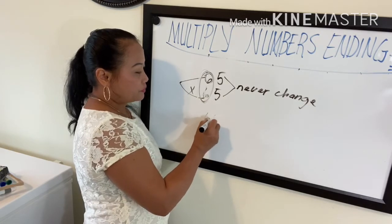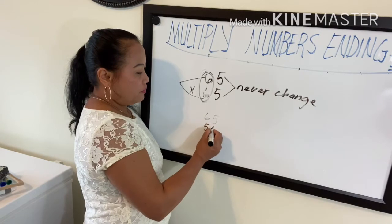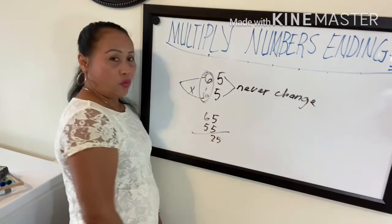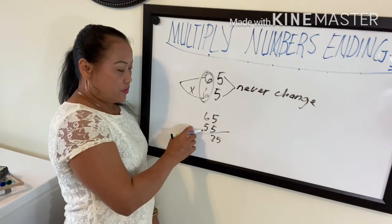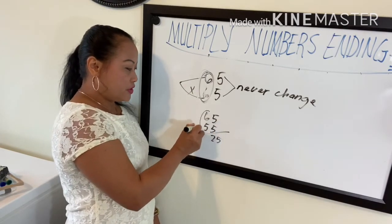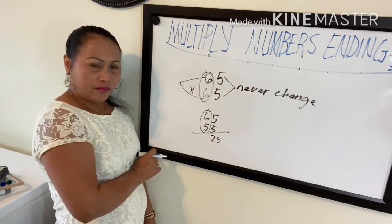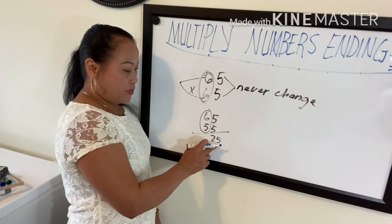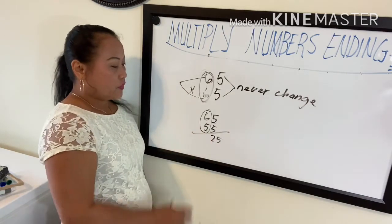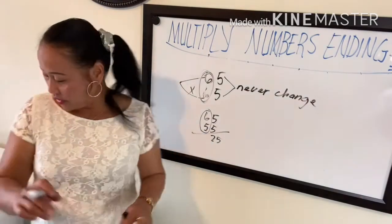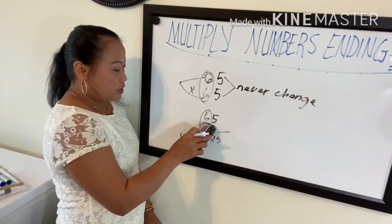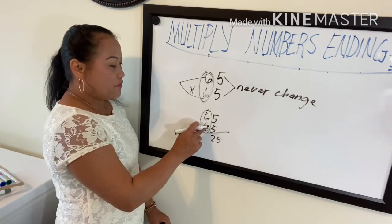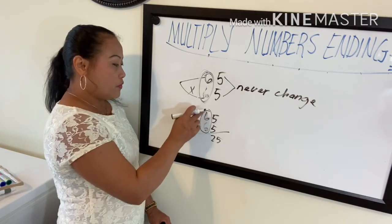But if the first digits are not the same — like 65 times 55 — you cannot apply this technique. You cannot bring down the whole 25, because the first digits must be the same. So it must be either all fives or all sixes — both top and bottom must match.